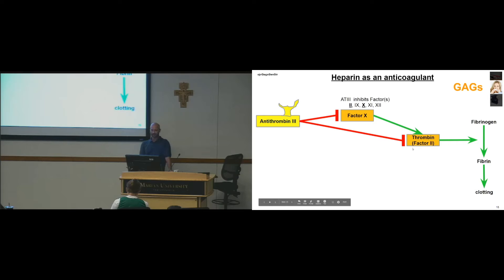Antithrombin 3 blocks those. It blocks 2, 9, 10, 11, and 12, but 2 and 10 are the big ones. So antithrombin 3 blocks that.